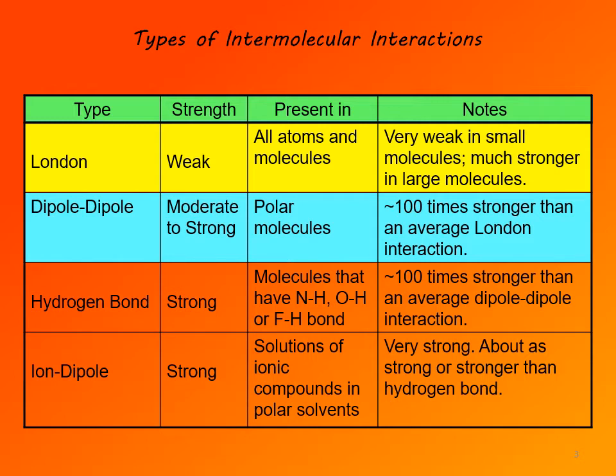Another type of intermolecular interactions are dipole-dipole interactions, and they are moderate to strong. They are characteristic of polar molecules. An average dipole-dipole interaction is about 100 times stronger compared to an average London interaction.